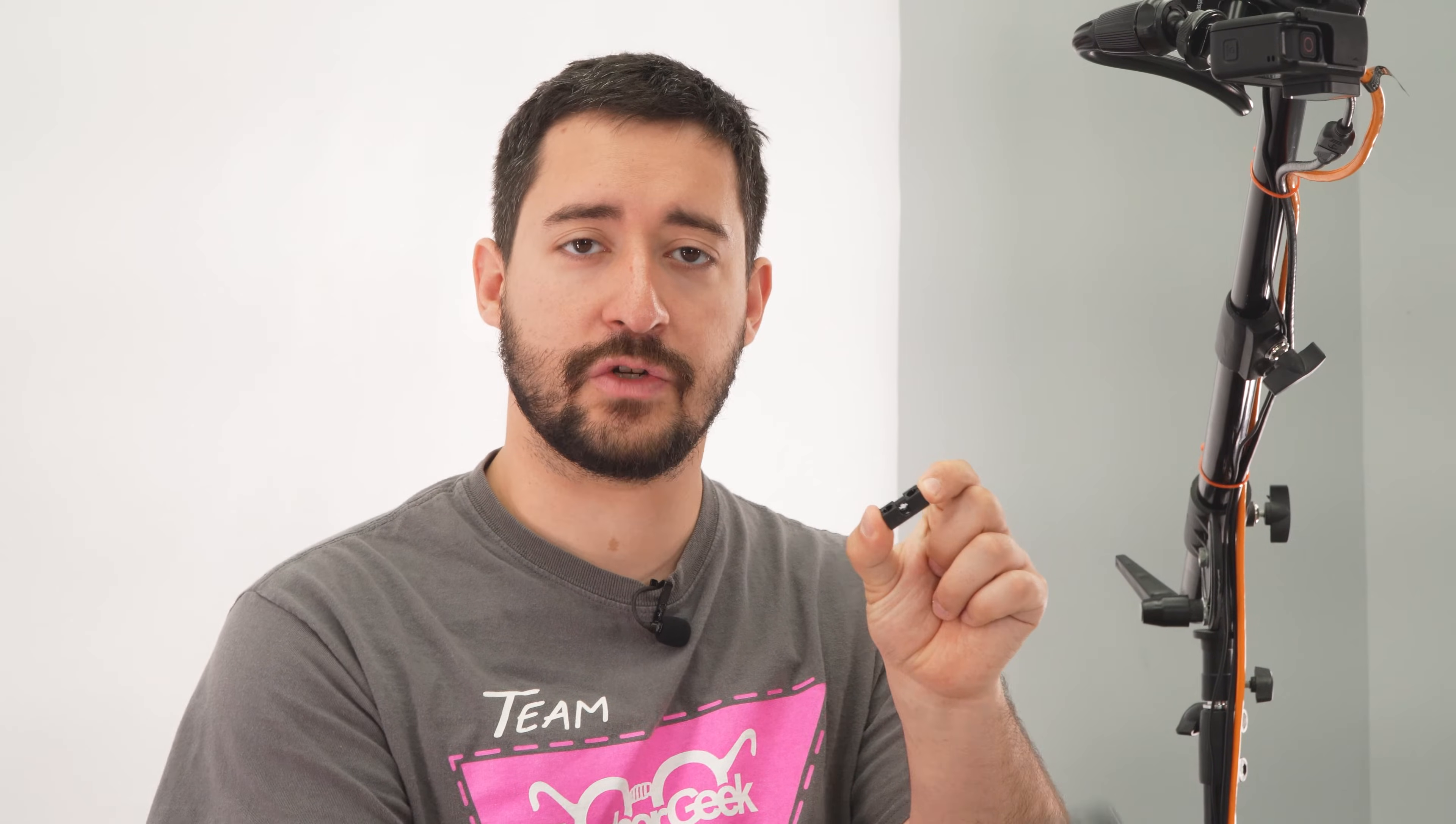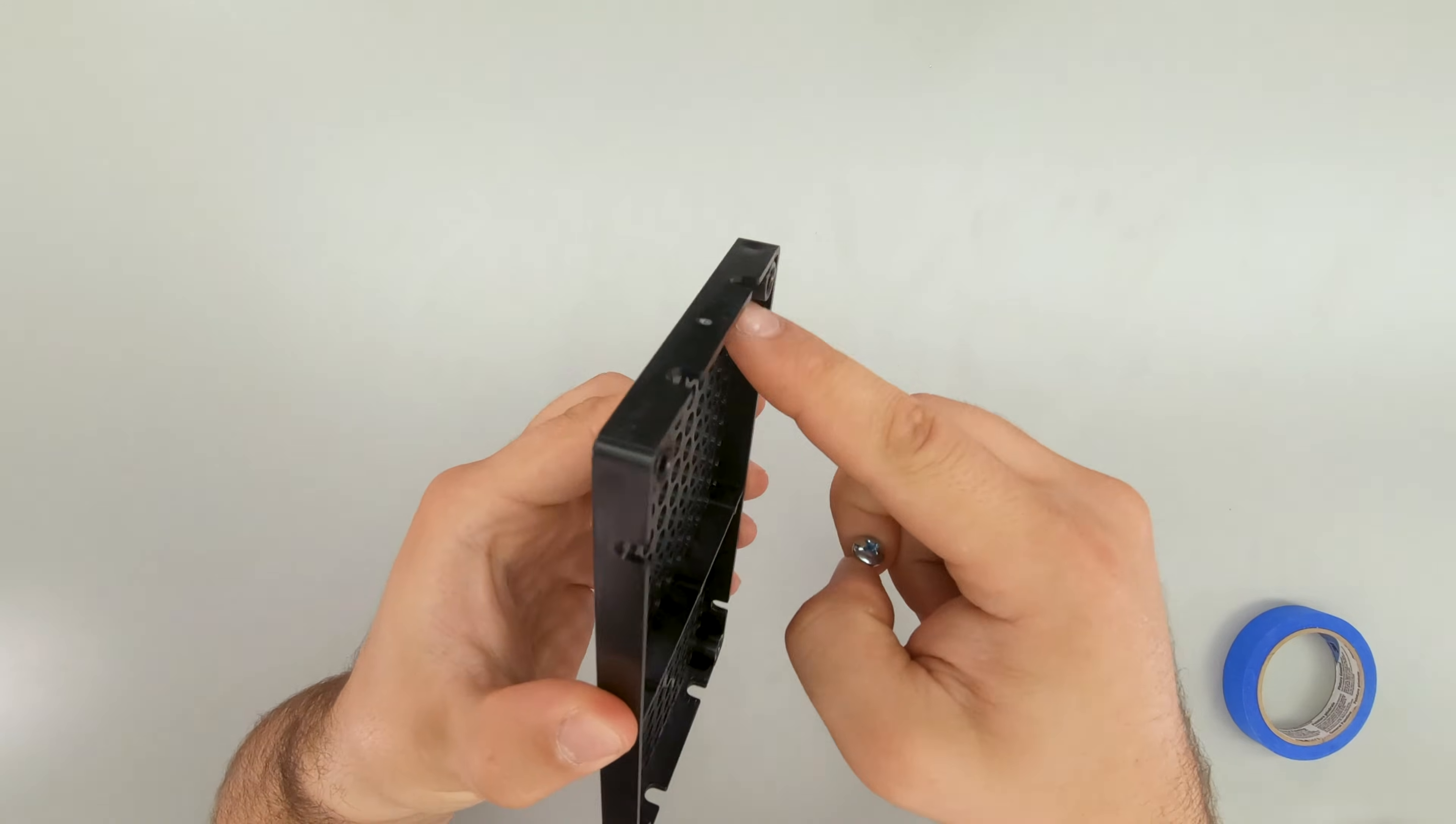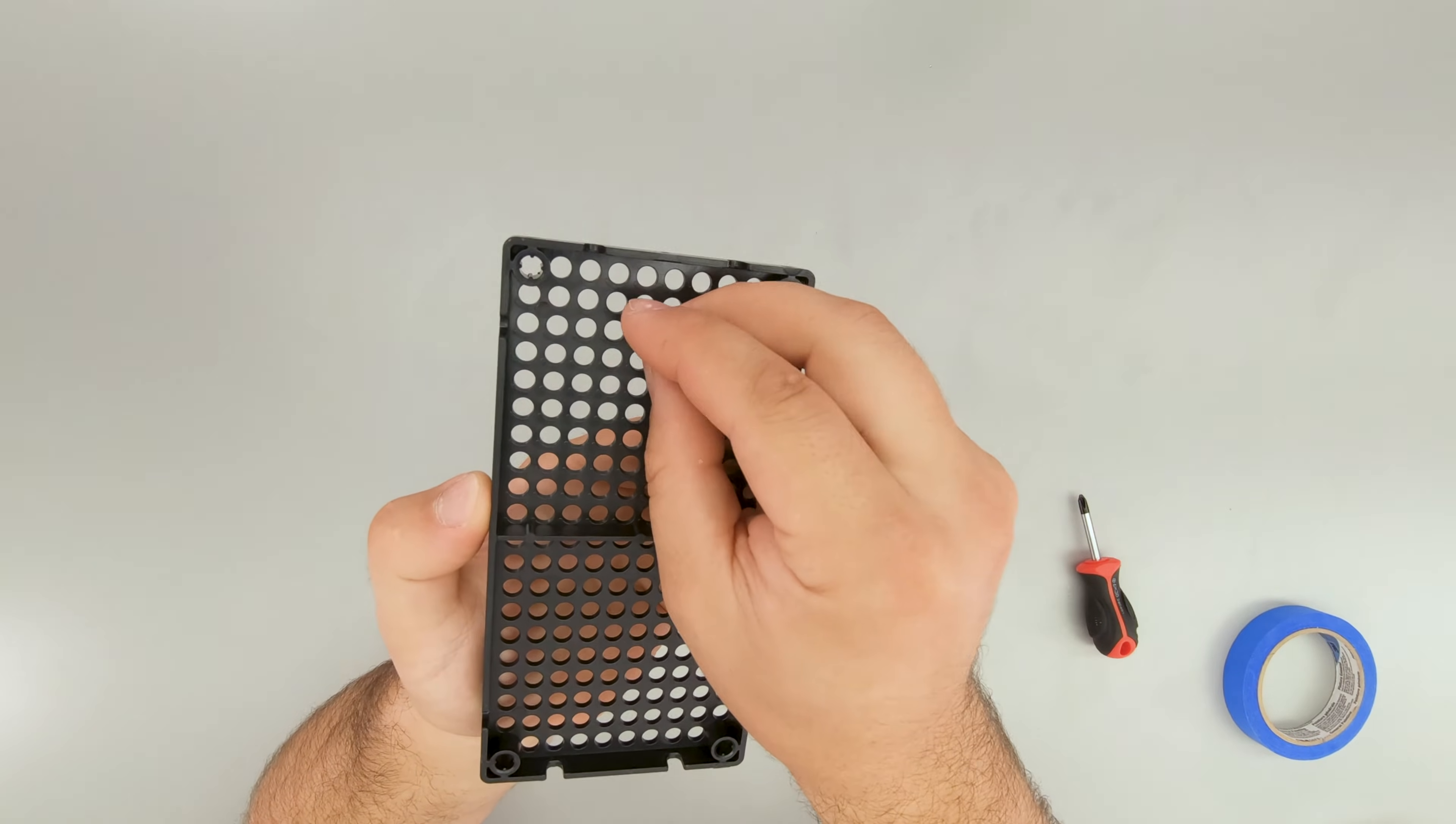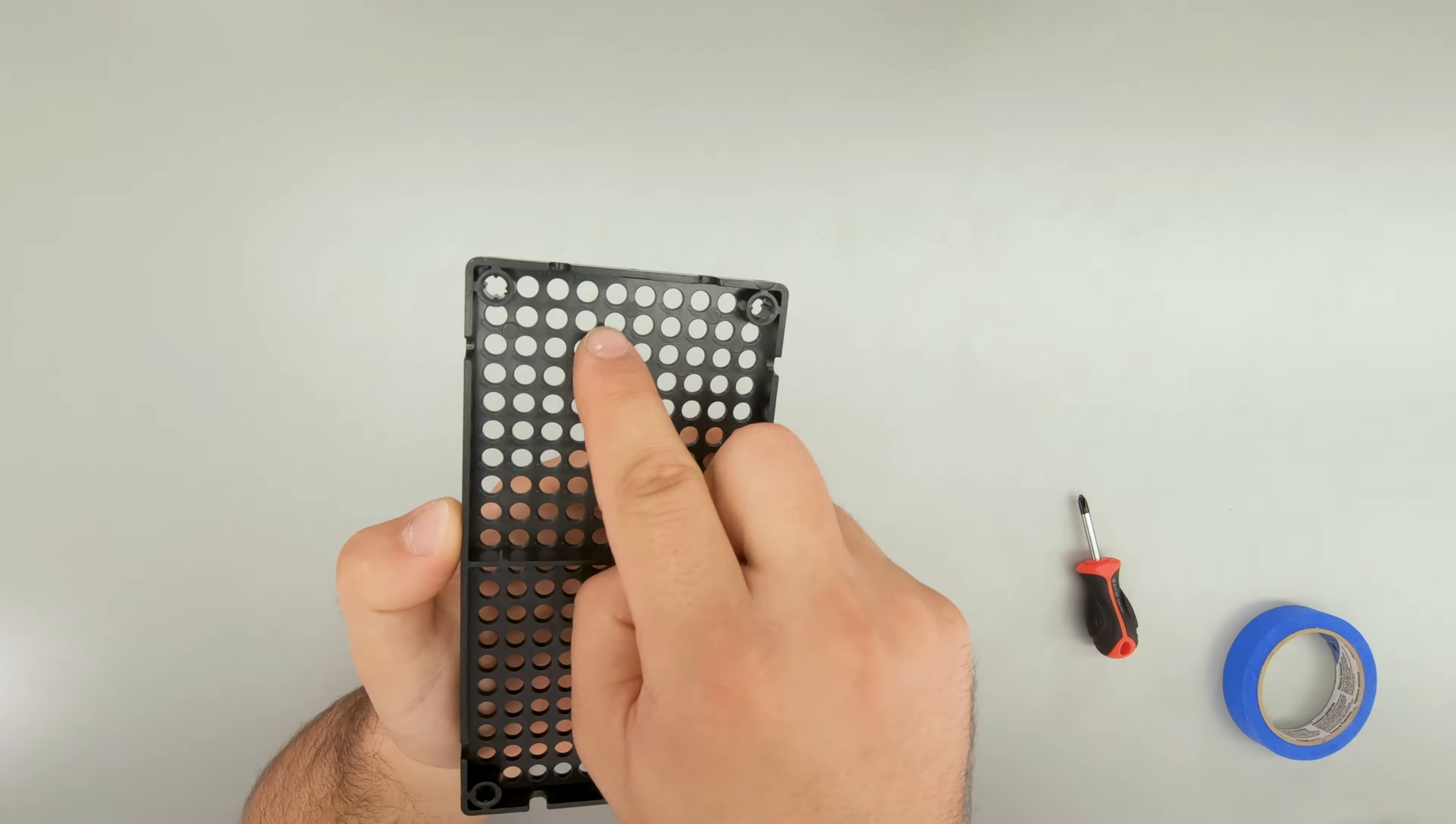We're going to start by attaching two perpendicular blocks to our hole plate using two screws and two nuts. I'm going to put my screw through the bottom of the hole plate, the concave side, so there are four holes between the screw and the edge on the side, and two holes between the screw and the top.